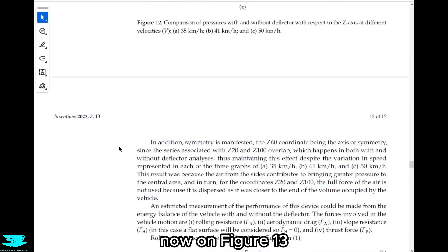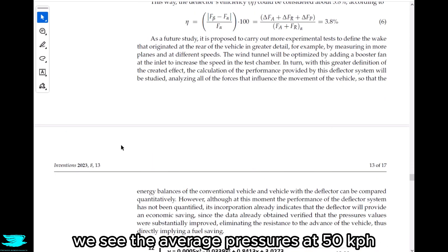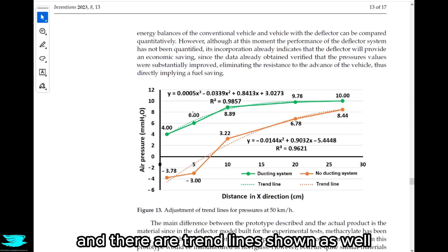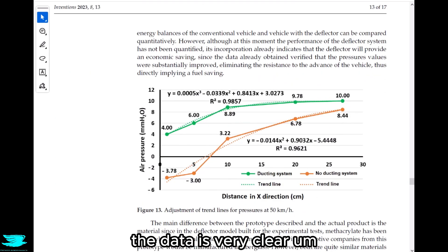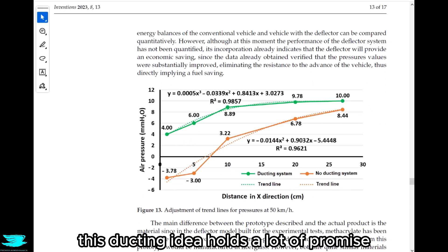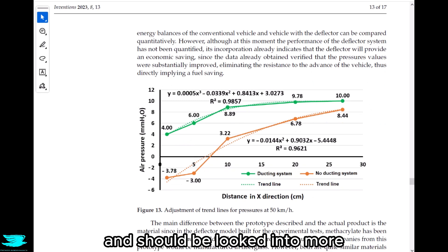In figure 13 we see the average pressures at 50 kph, and there are trend lines shown as well. The data is very clear in how much the ducting really improves the pressure downstream. So overall, I think that from a drag point of view, this ducting idea holds a lot of promise and should be looked into more.